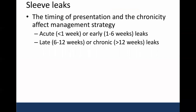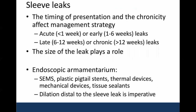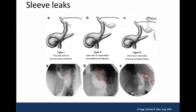The timing of presentation and the chronicity of the leak very much affect management strategies. We tend to define acute or early leaks as those that occur within six weeks following the sleeve gastrectomy, and late or chronic leaks as those that occur within six to twelve weeks following. The size of the leak very much plays a role in what endoscopic therapy we will offer. Type 1 leaks are really small leaks with no documented collection. Type 2 is a leak associated with some intra-abdominal abscess. Type 3 are those that are much more complex and lead to various fistulas throughout the abdomen or thorax. Distal dilation of the sleeve is imperative.